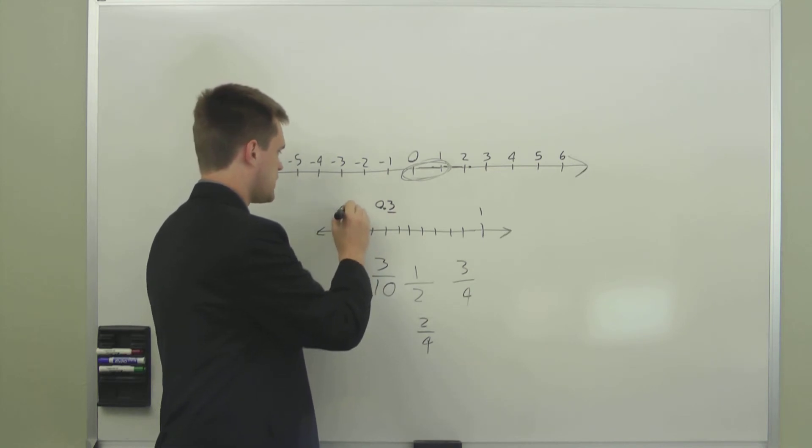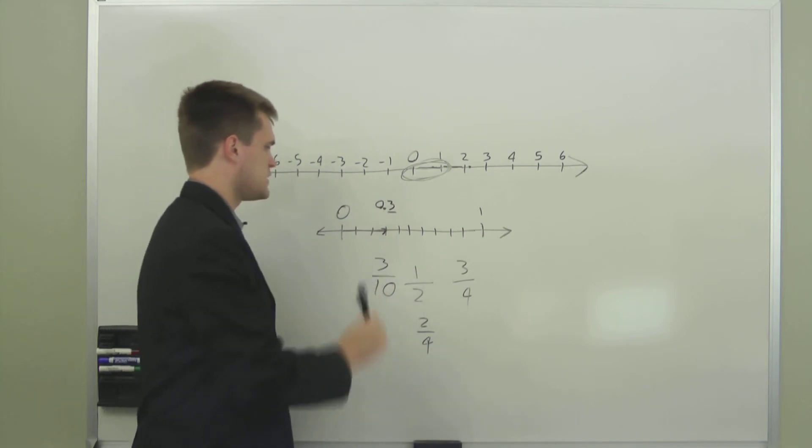So we take the integer immediately beforehand and then count forward three of the ten parts, and that gives us 0.3, which is the same as three-tenths.